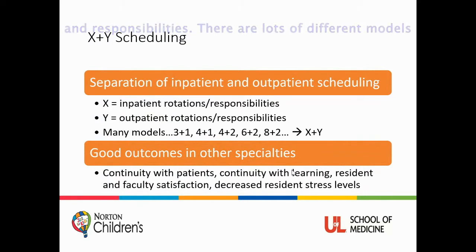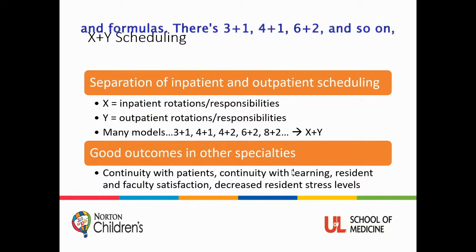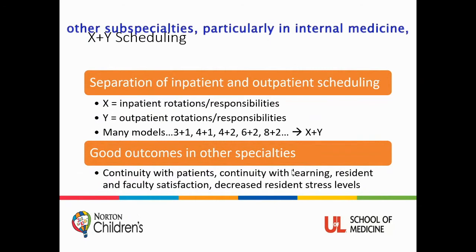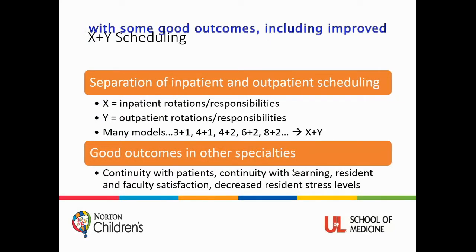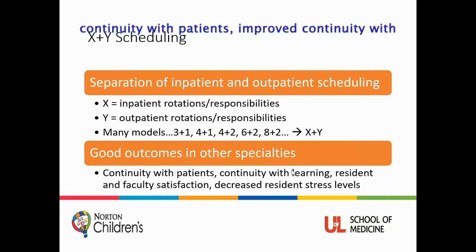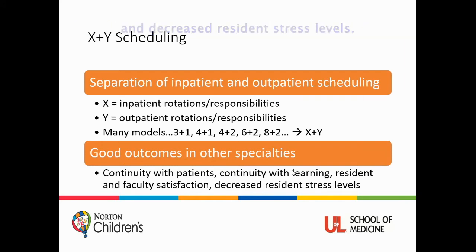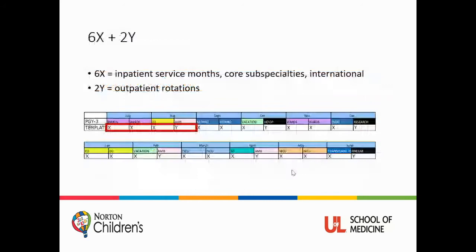There are lots of different models and formulas — three plus one, four plus one, six plus two, etc., which is where it gets its name, X plus Y. And it's not necessarily a new thing. It's actually been studied in other subspecialties, particularly in internal medicine, with some good outcomes, including improved continuity with patients, improved continuity with learning, improved resident and faculty satisfaction, and decreased resident stress levels.